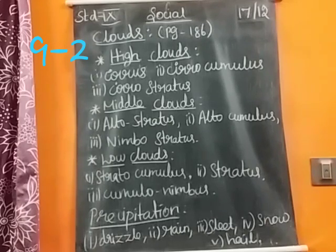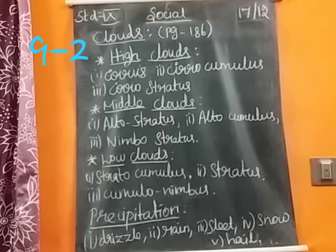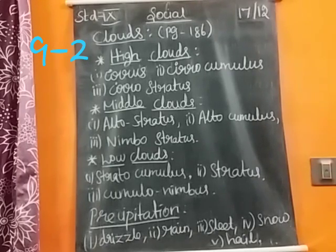The first form is drizzle — the falling of numerous uniform minute droplets of water with a diameter of less than 0.5 millimeters. Drizzle falls from low clouds and is a very fine, light rain that is barely visible.